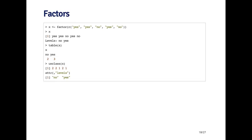Now, the unclass function strips out the class for a factor, for a vector. For example, if I call unclass on x, it'll kind of bring it down to an integer vector. And you can see that underlying the factor's represented as 2, 2, 1, 2, 1. So yes is coded as 2 and no is coded as 1.